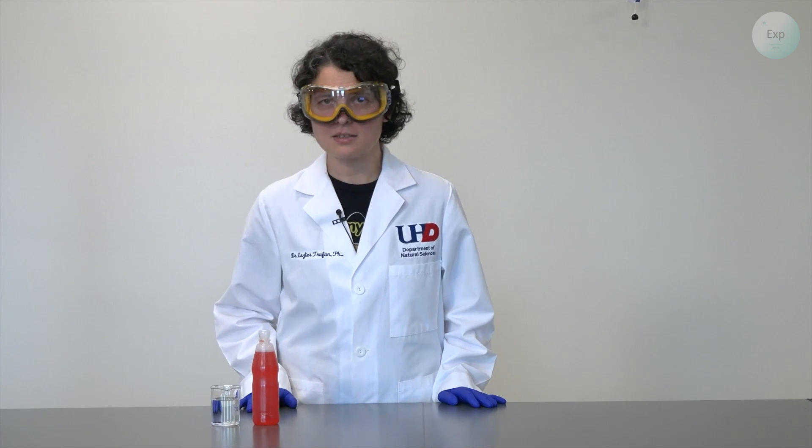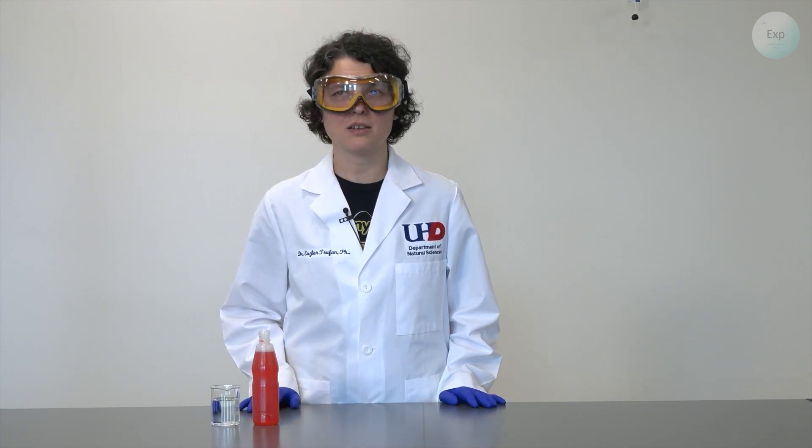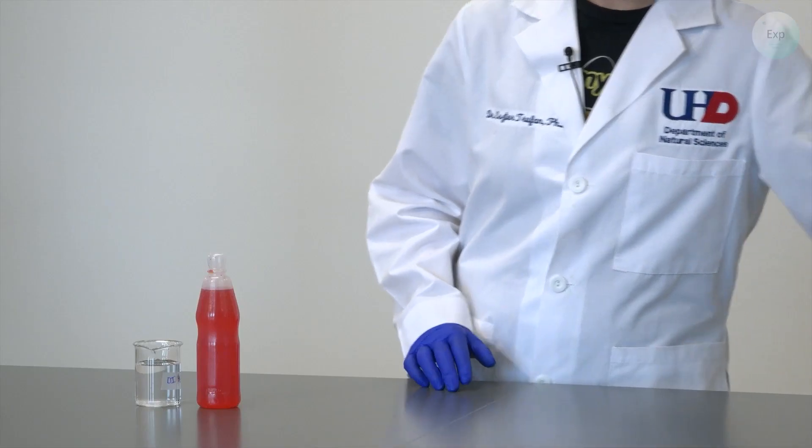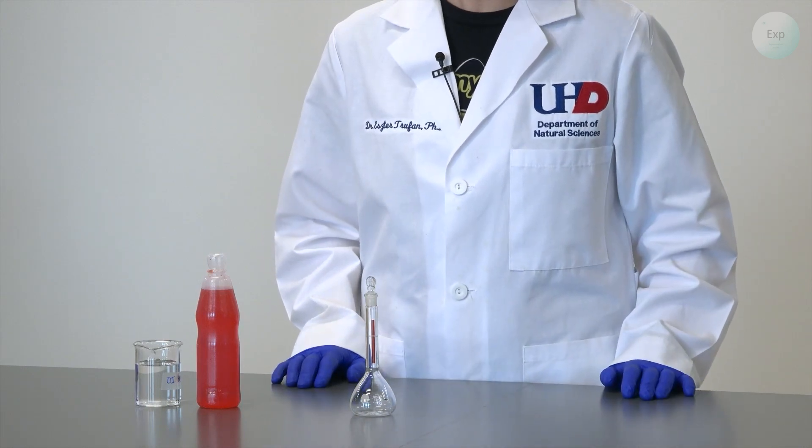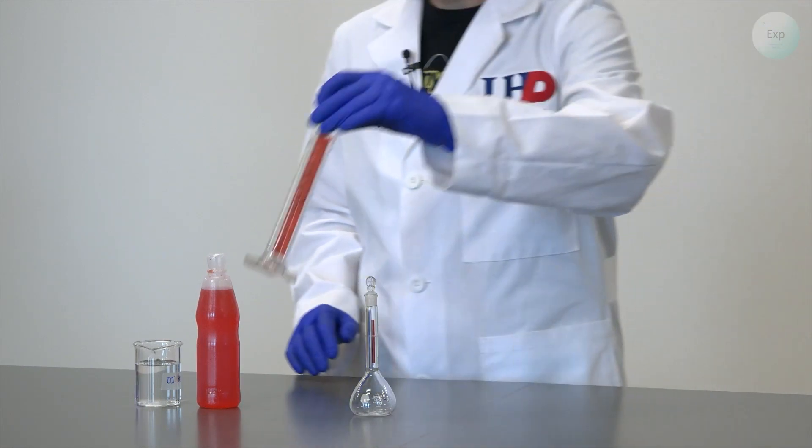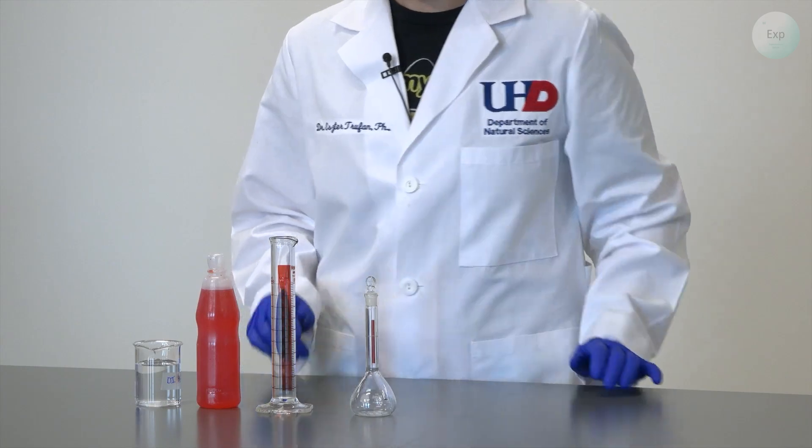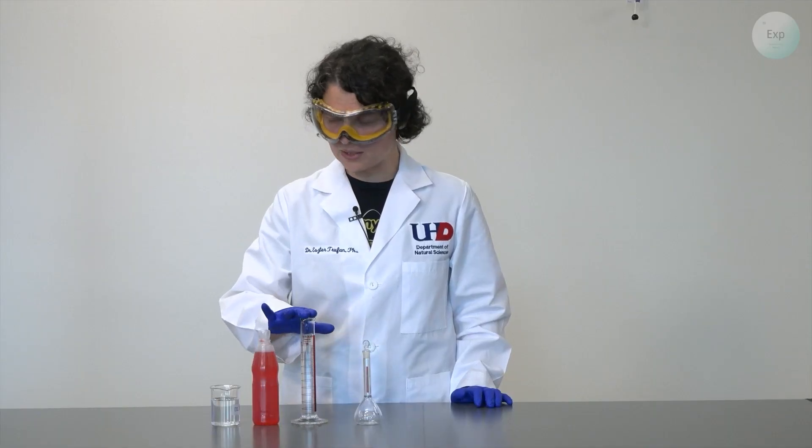We'll also need some deionized water to dilute it a little bit. Because we're making a solution we're going to need a volumetric flask and to know the original volume of juice that we're using we'll need a graduated cylinder.